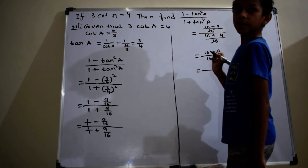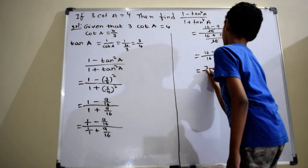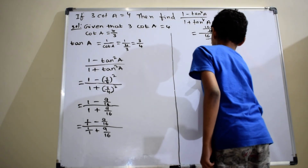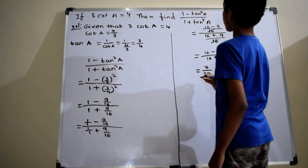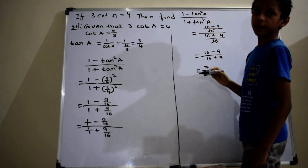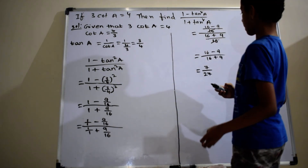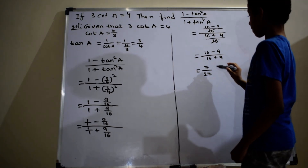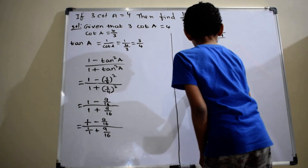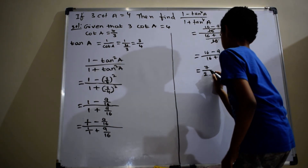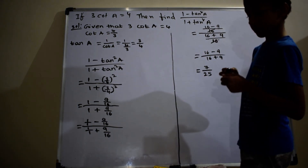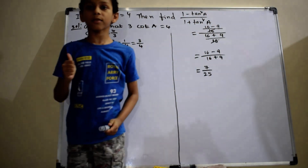16 minus 9 equals 7, and 16 plus 9 equals 25. So the value of 1 minus tan square A by 1 plus tan square A equals 7 by 25. Thanks for watching. Thank you.